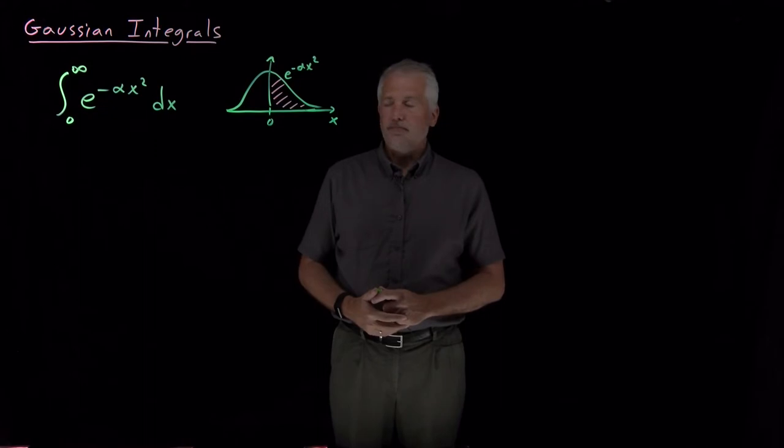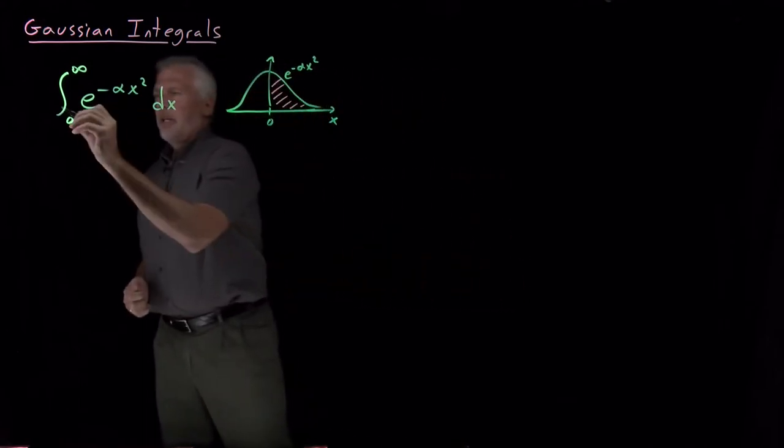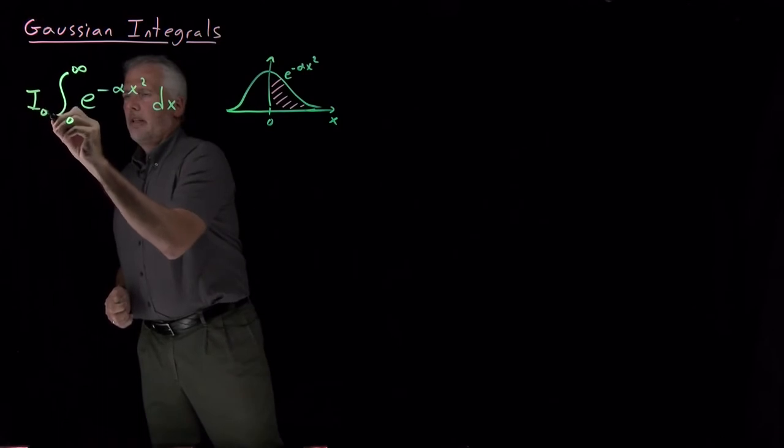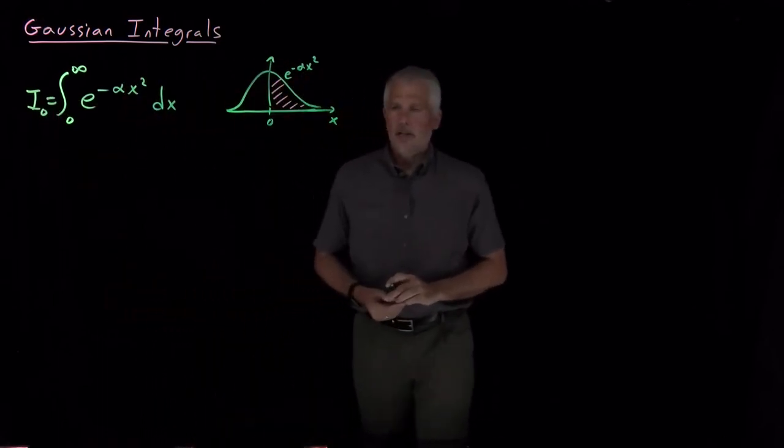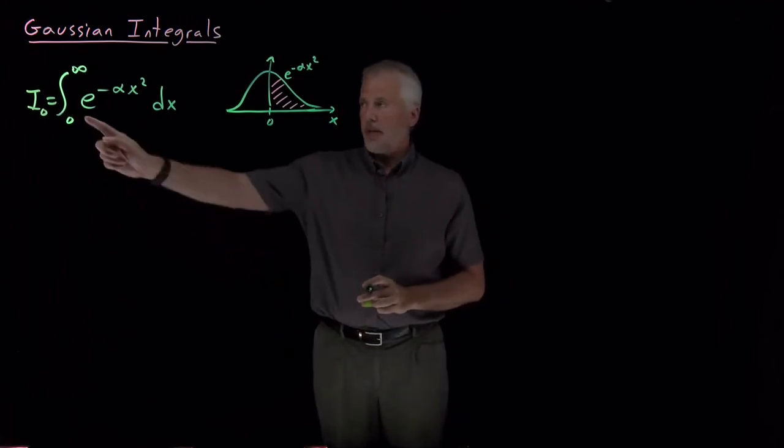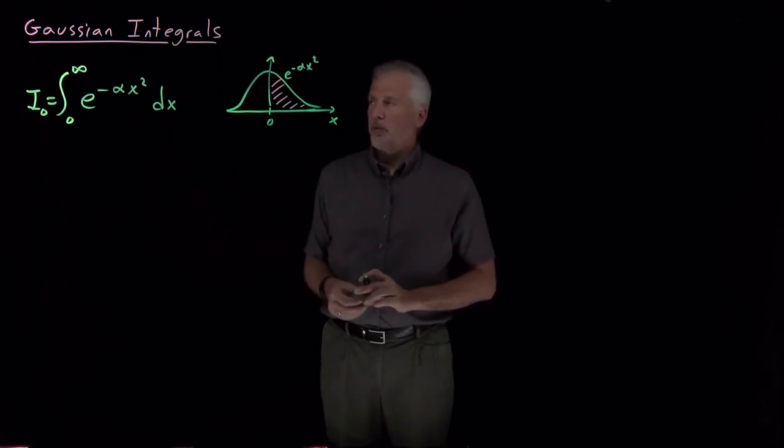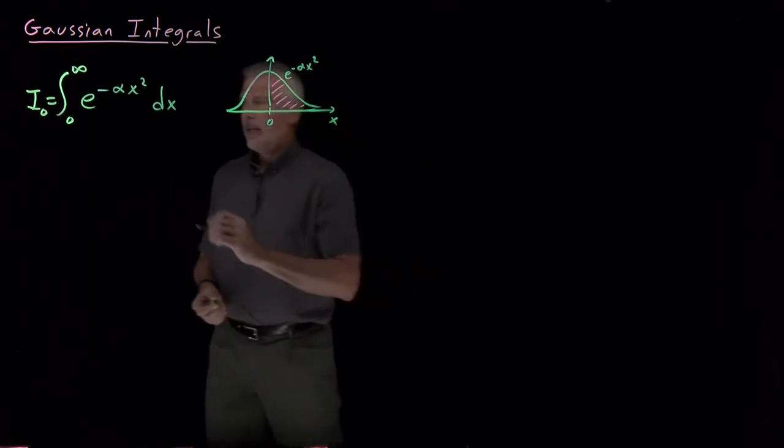So how do we do this integral? Let's go ahead and define, give this integral a name. Let's call it I naught. The reason I'll call it I sub zero or I naught is because it's related to some other forms. If I had some powers of x inside here, those would be I sub one or I sub two and so on, but for now we'll stick with this integral I zero.